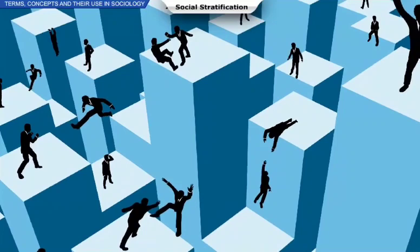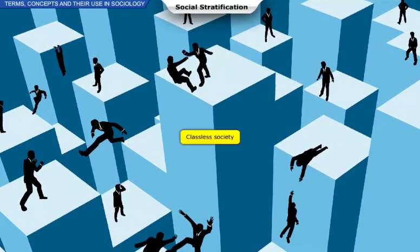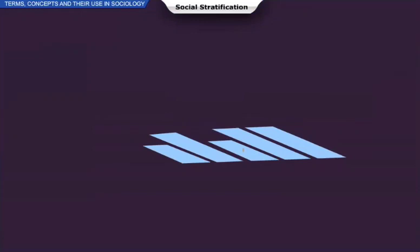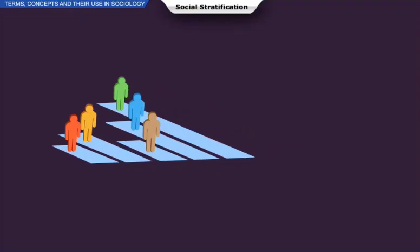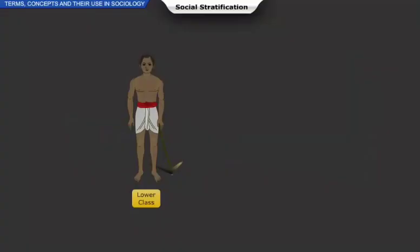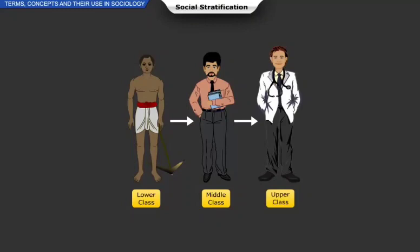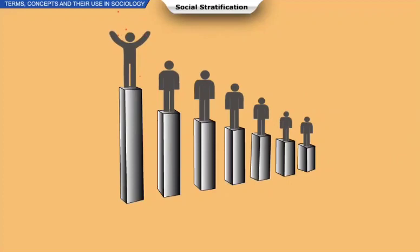According to functionalist theory, a classless society can never exist. It further believes that social stratification is like a natural method of correction, giving assurance that the most deserving persons will automatically get the topmost position. Unlike the caste system, the class system rests on self-attained positions, and a modern democratic society allows a person to shift his or her class position and reach the highest level of the class system.